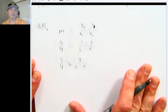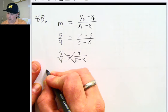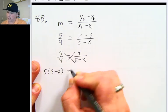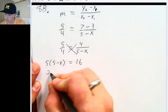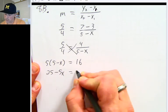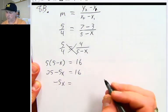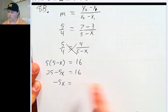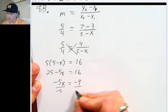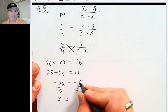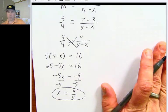Now we can do some cross multiplying. This is a task you can do whenever you have a fraction equals a fraction. On one side, I have 5 times 5 minus x. On the other side, I have 4 times 4, which is 16. Distribute the 5 here. 25 minus 5x equals 16. Subtract this 25 from both sides. So negative 5x equals negative 9. And then divide both sides by negative 5. We end up with x equals 9 fifths.